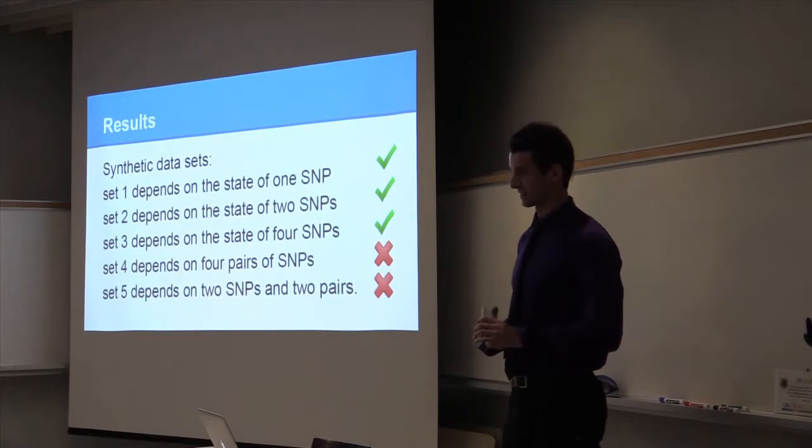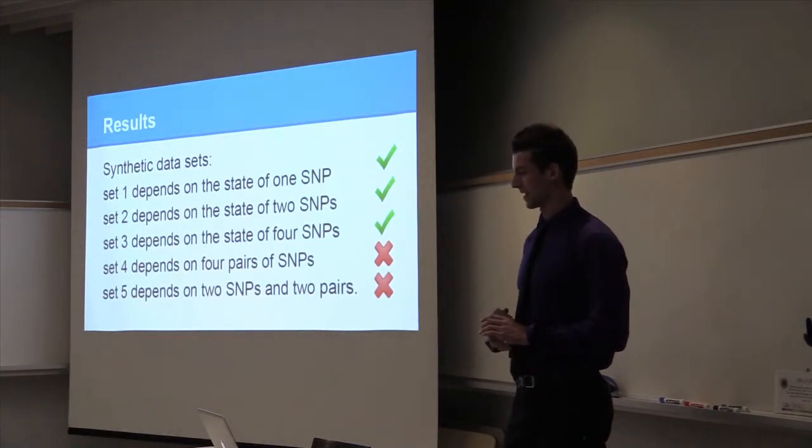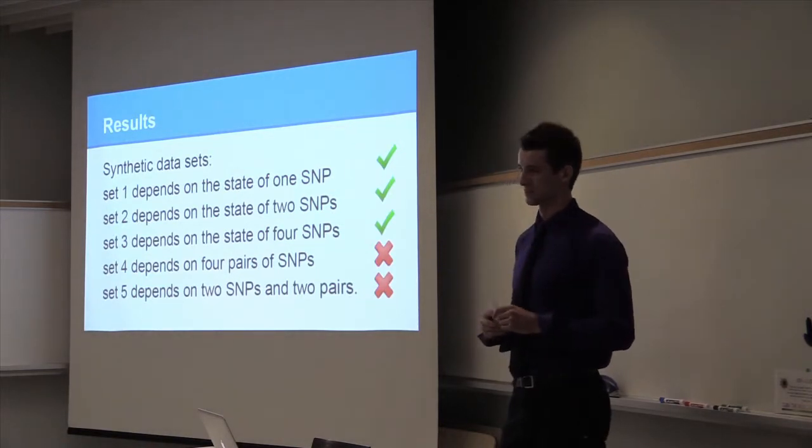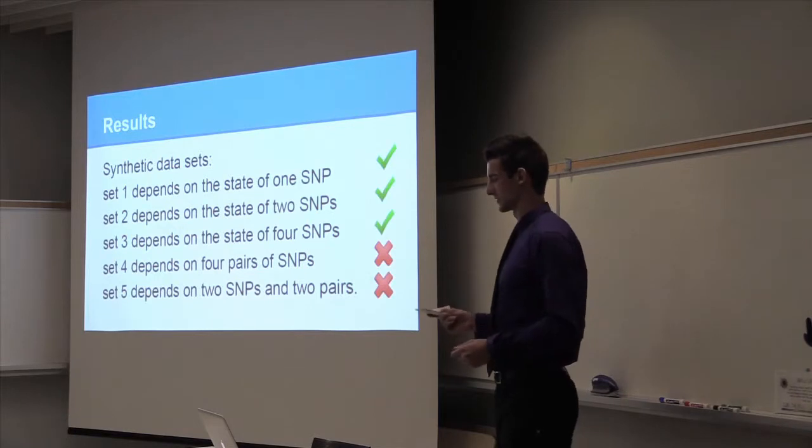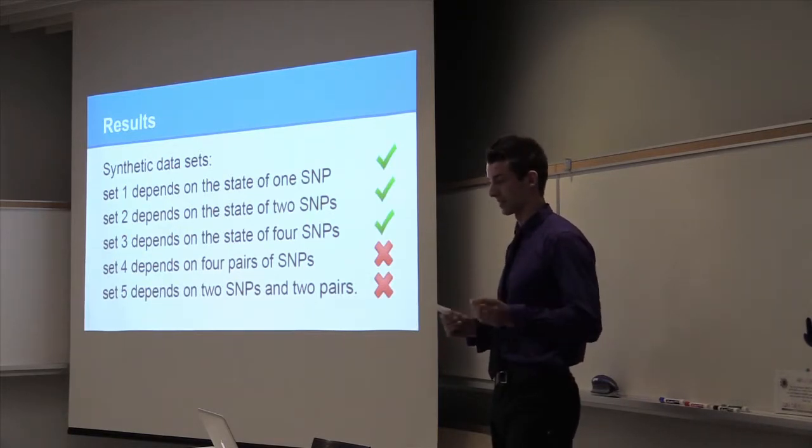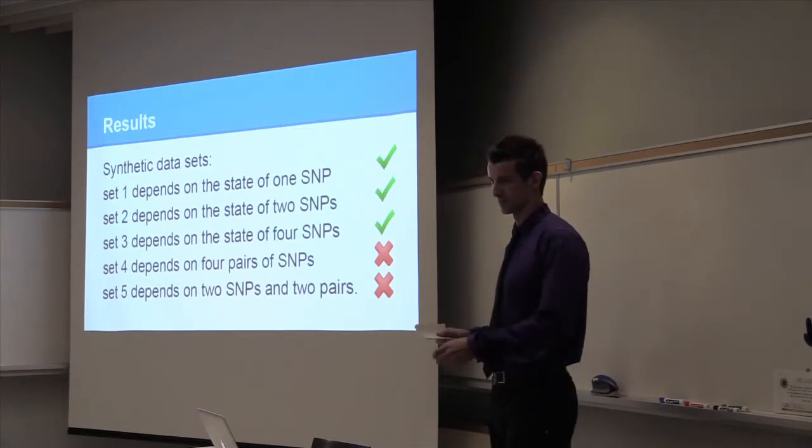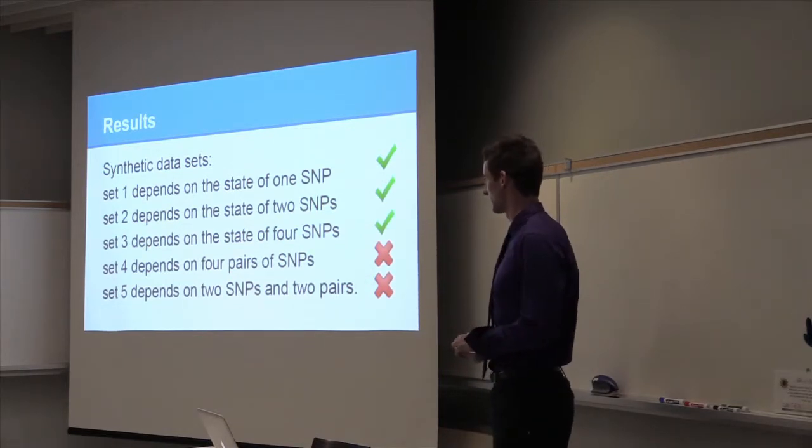So my advisor, for proof of concept, he made up some synthetic data sets of a hundred individuals, and each of those hundred individuals have a hundred SNP values, and he kept the answer key. So set one depends on the state of one SNP. He was just looking for the one SNP that predicted the trait, that perfectly predicted the trait.